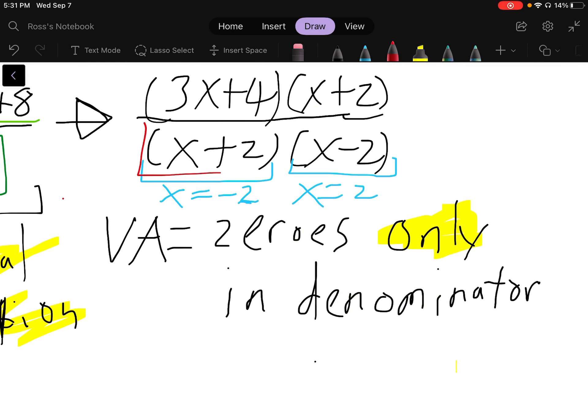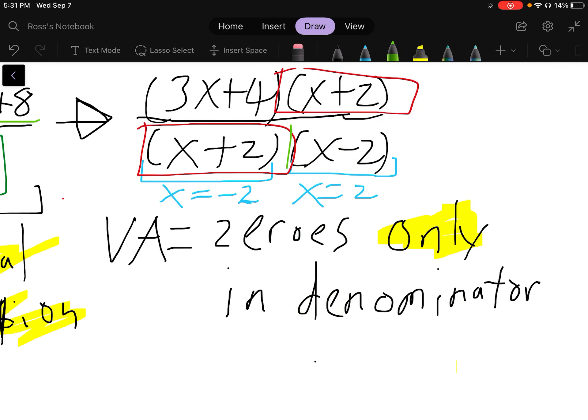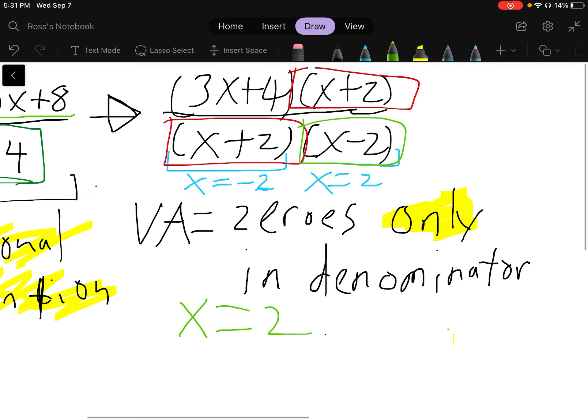So the plus 2 happens both in the denominator and the numerator, that's not only in the numerator, that's in both, so that's not a VA. But what is a VA is the x minus 2. This is a VA. So we would say here we have a VA, a vertical asymptote, at x equals 2.